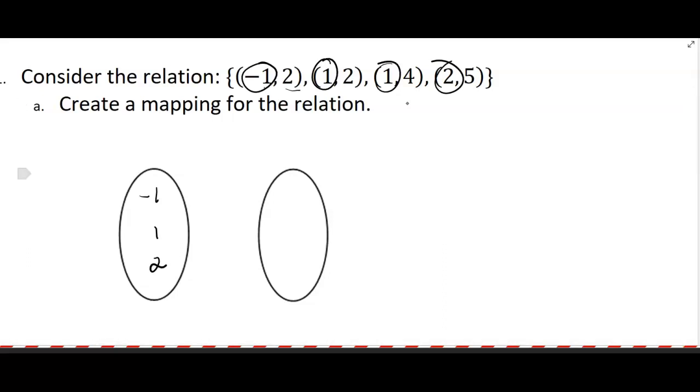And then what about the second components? Well, you've got two—it's in there twice—and then a four and a five.